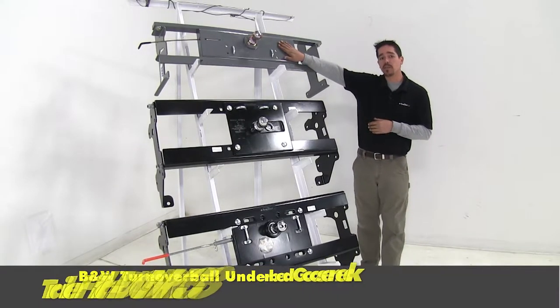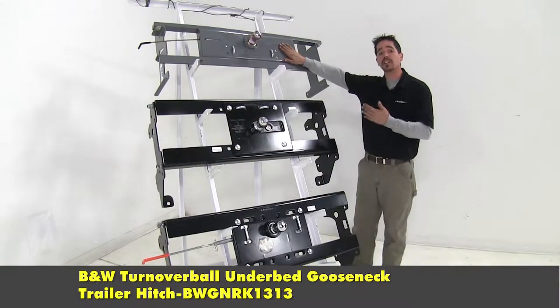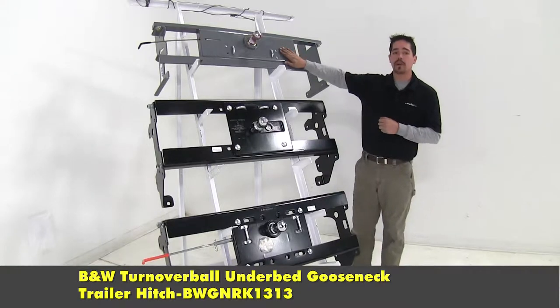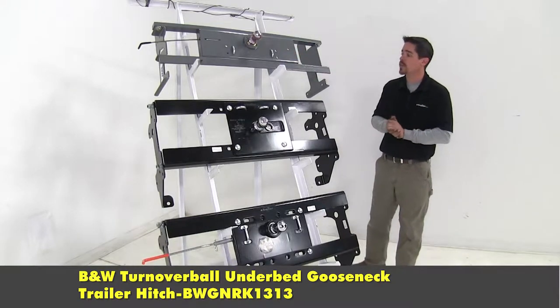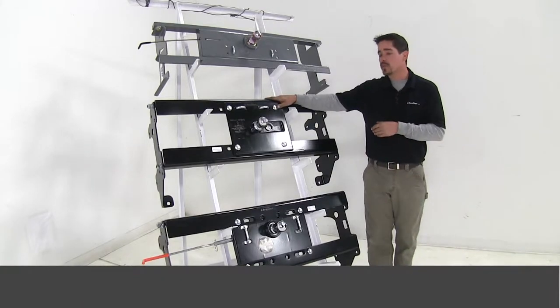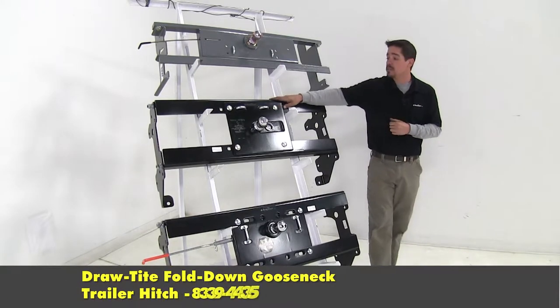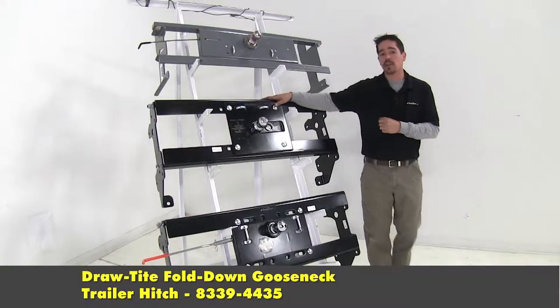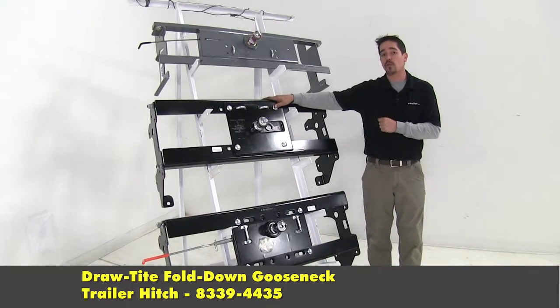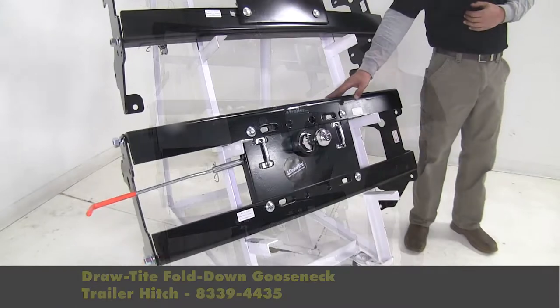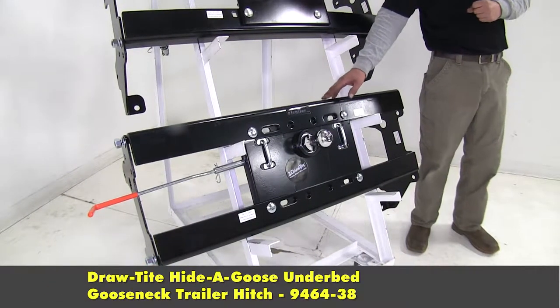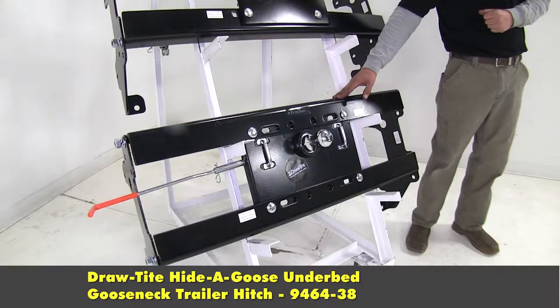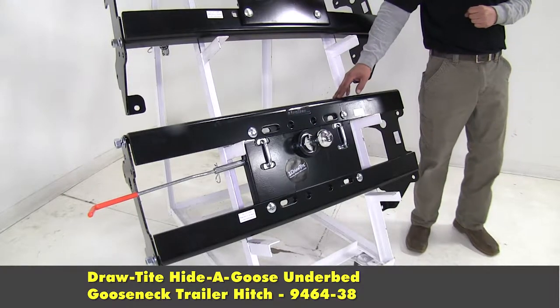Here we're going to have our B&W, and that's going to be the Turnover Ball Underbed Gooseneck Trailer Hitch, part number BWGNRK1313. Now here we have the Draw Tight Fold Down Gooseneck Trailer Hitch, and that's going to be part number 8339-4435. And finally on the bottom here we have the Draw Tight Hide a Goose Underbed Gooseneck Trailer Hitch, part number 9464-38.